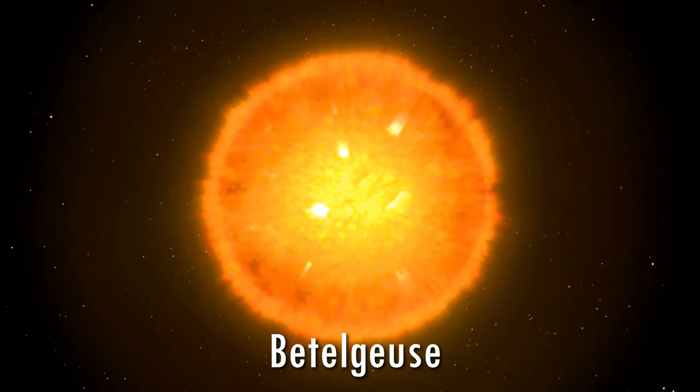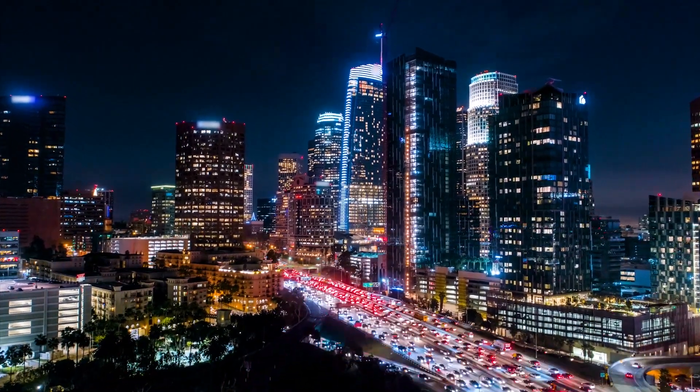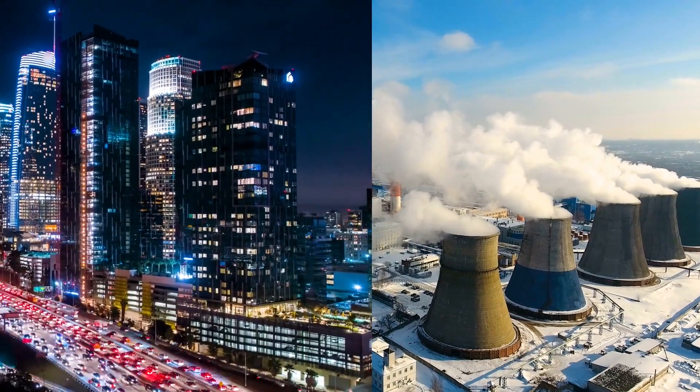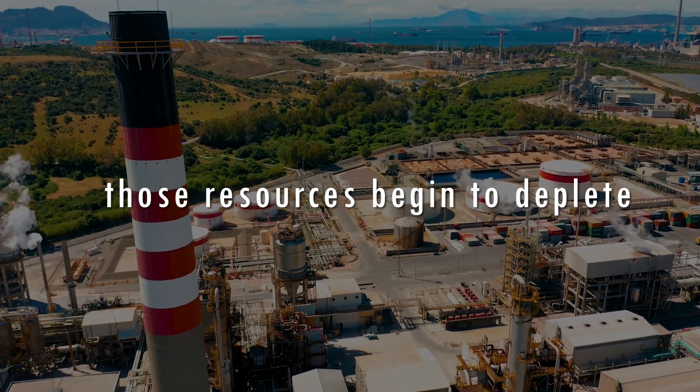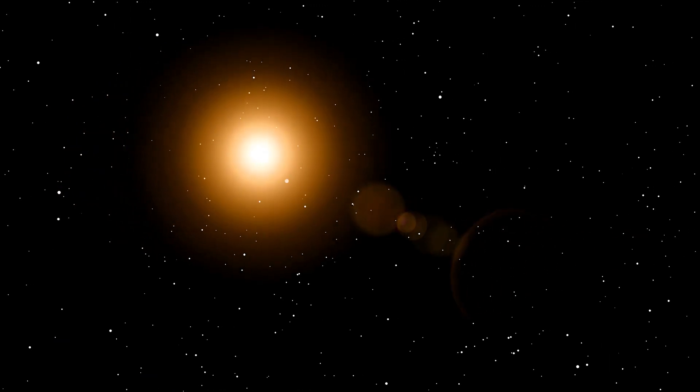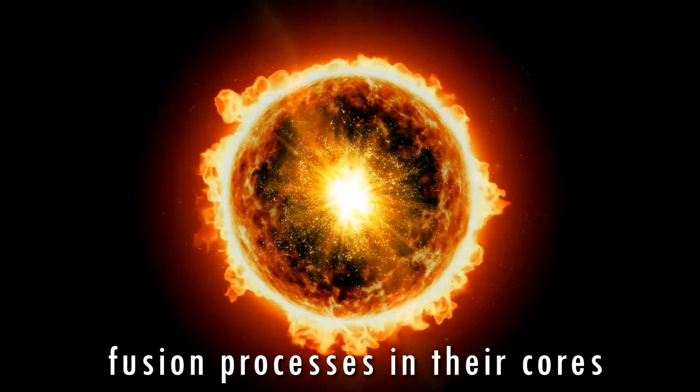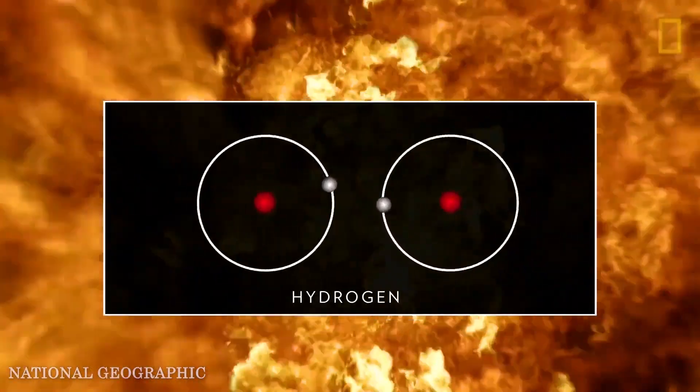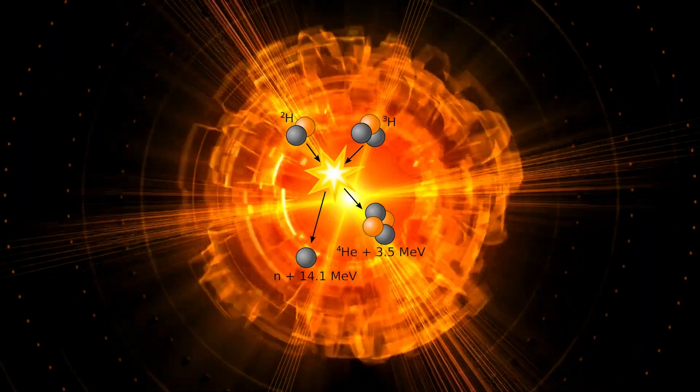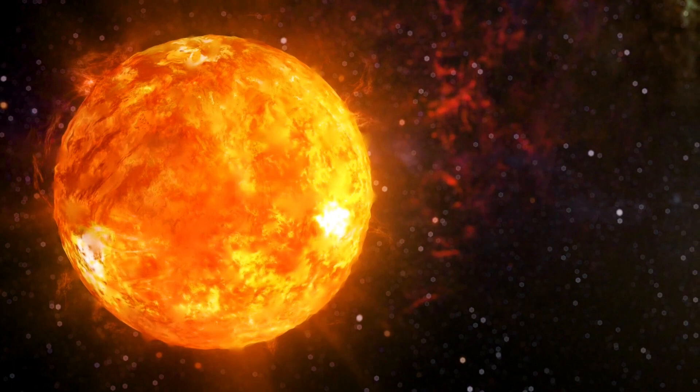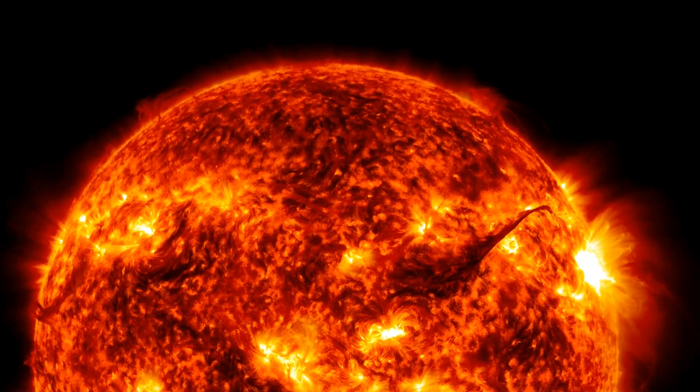Have you ever wondered how stars like Betelgeuse evolve over time? Picture a bustling city with its primary industry being manufacturing. As long as resources are plentiful, the city thrives. However, as those resources begin to deplete, the city must adapt, evolve, and sometimes face decline. Stars, too, have their own life cycle, driven by the fusion processes in their cores. The main sequence phase of a star's life is akin to the city's golden age. During this phase, the star's core is a hub of activity, with hydrogen atoms fusing into helium. This nuclear fusion process releases an immense amount of energy, balancing the gravitational force attempting to pull the star inward. But for a massive star like Betelgeuse, this phase is relatively short-lived in astronomical terms.